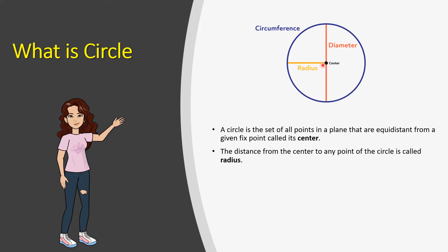The distance from the center to any point of the circle is called the radius, and it is represented by the yellow line. Then twice the radius is called the diameter.